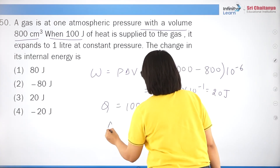Question 42: a body is projected with velocity 3î + 4ĵ + 5k̂ m/s from the ground, with the xy-plane as ground and z-axis vertical. Horizontal speed = √(3² + 4²) = 5 m/s; vertical speed = 5 m/s. Range = 2×ux×uz/g = 2×5×5/10 = 5 m, which is option 3.